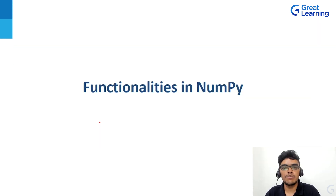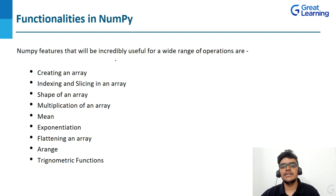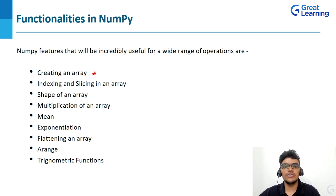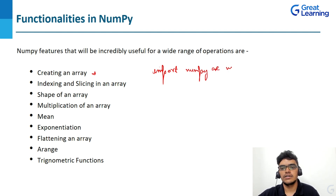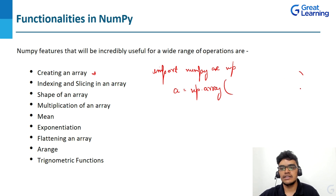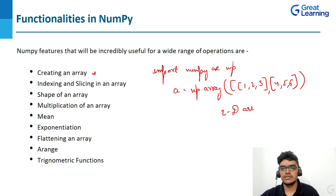NumPy features that are incredibly useful for a wide range of operations include creating an array. To create an array, you simply write import numpy as np, then create a variable, for example a = np.array, and inside this you create the array values. This is how you create a 2D array.